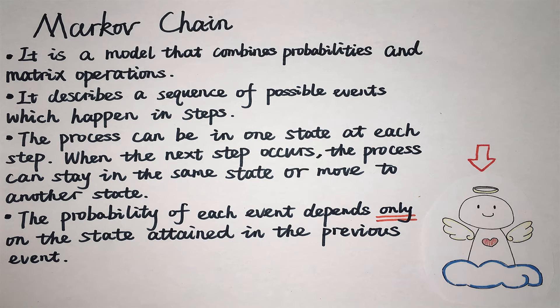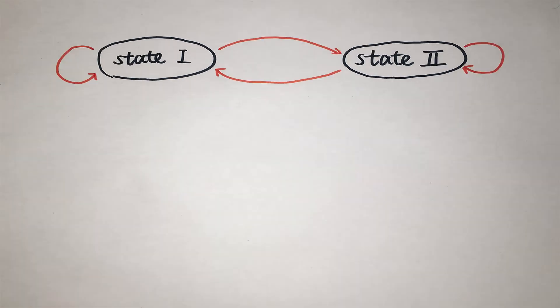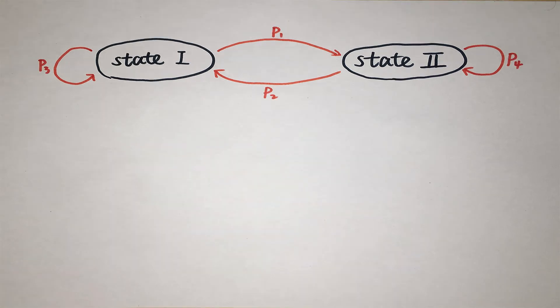Basically, it is a combination of probabilities and matrix operations. The Angel and Daemon model has two states with four possibilities. We normally describe it with a transition diagram. Each arrow represents a movement from one state to another, and the number on the arrow represents the probability of this movement.